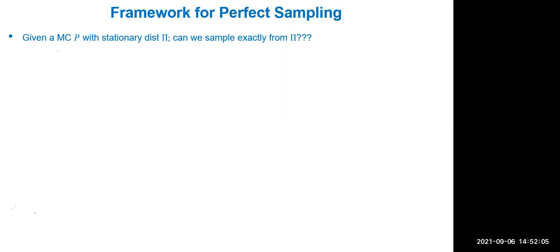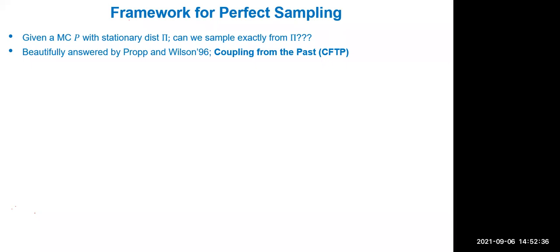Now let's move on to perfect sampling. Can perfect sampling even be done? You have an unstructured set where you can only test membership — you can't enumerate it, otherwise complexity hierarchies would collapse. Sampling perfectly from the uniform distribution on this set is quite amazing. This was answered by a seminal paper by Propp and Wilson in 1996 using a technique called CFTP: Coupling From The Past.